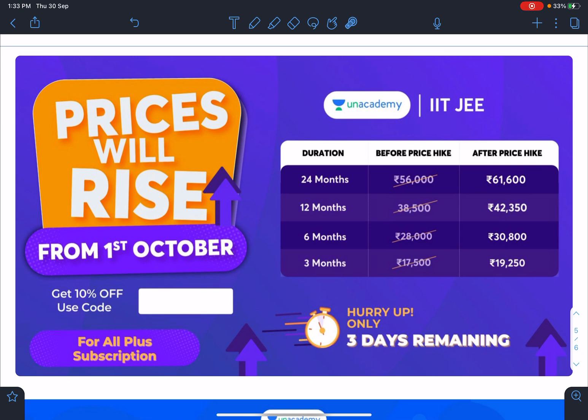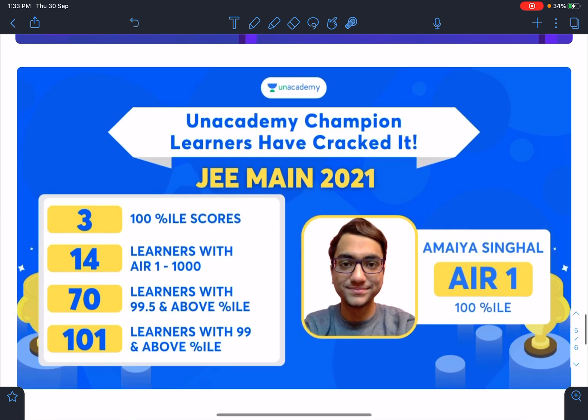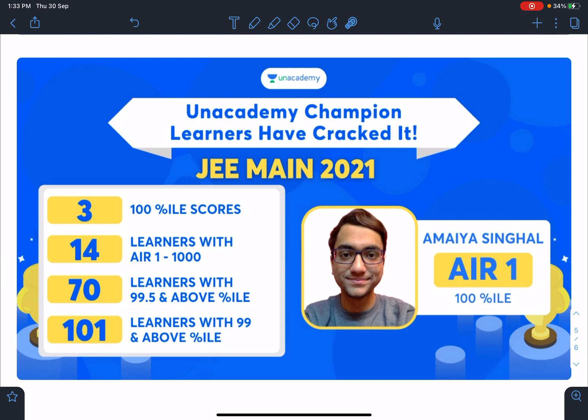So guys here again there is some information: the prices will rise again in Unacademy and these are the old and new prices. These rates will be applicable from first of October, so tomorrow onwards there will be price hike. Those who are looking for Unacademy subscription can go for this. If you want additional 10 percent off you can use my code NATINSIR. And here for JEE Main 2021 it's amazing, a single All India Rank one and hundred percentile.